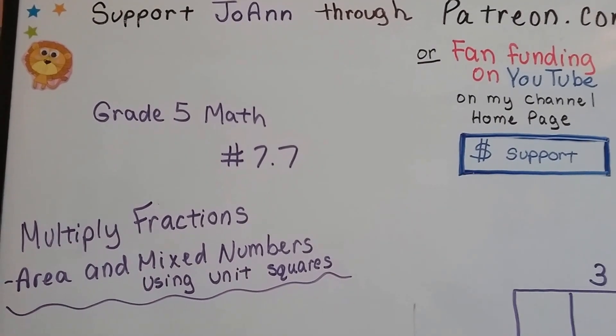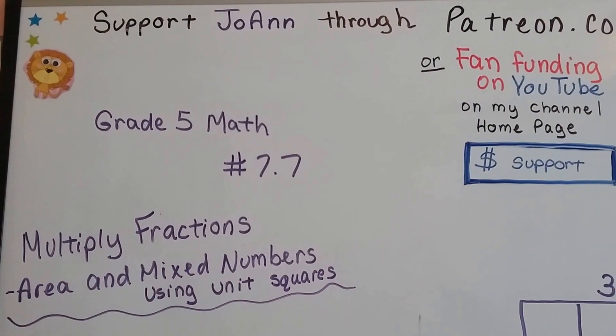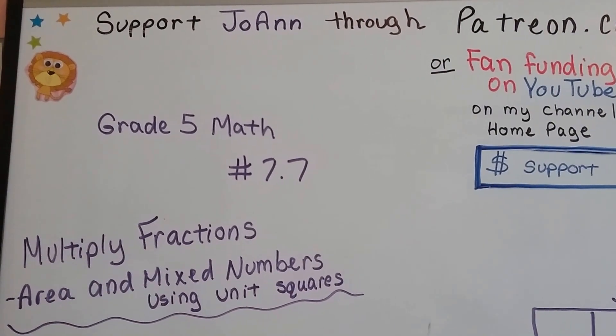Grade 5 math number 7.7: multiply fractions, area, and mixed numbers using unit squares.